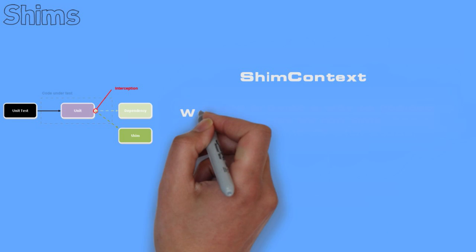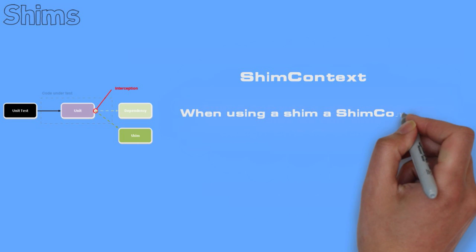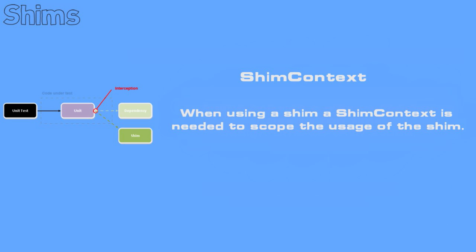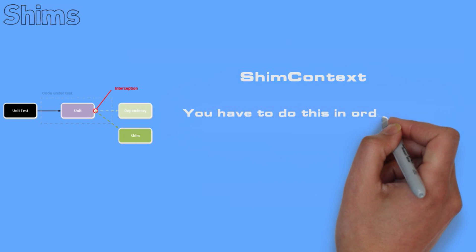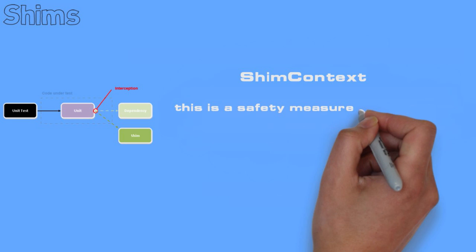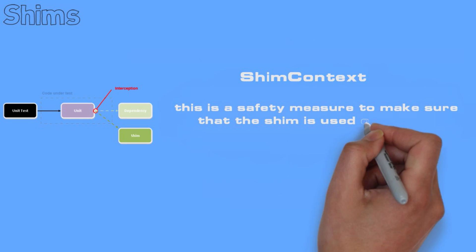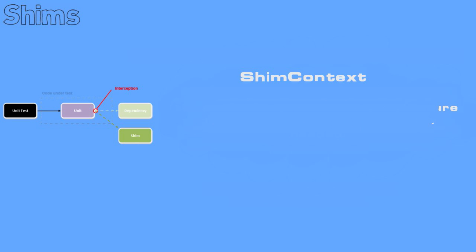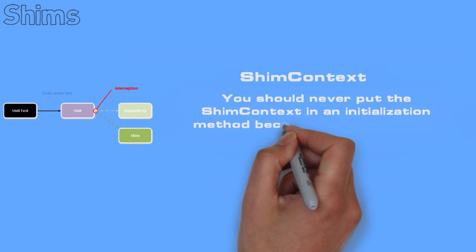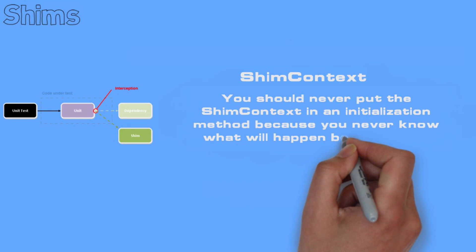SHIM CONTEXT: When using a shim, a shim context is needed to scope the usage of the shim. You have to do this in order for the solution to build. This is the safety measure to make sure that the shim is used only when needed. You should never put the shim context in an initialization method because you never know what will happen between two method calls.